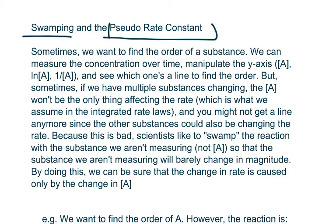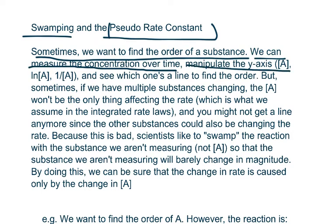Sometimes we want to find the order of a substance. We can measure the concentration over time, manipulate the y-axis such as changing the concentration of A into ln of A or 1 over A, and we could see which ones align in order to find the order. This was all from video 9.2 and 9.3.